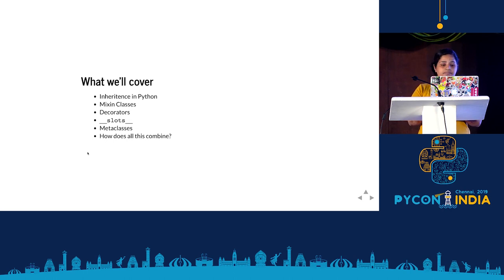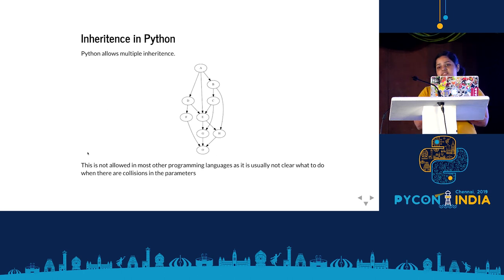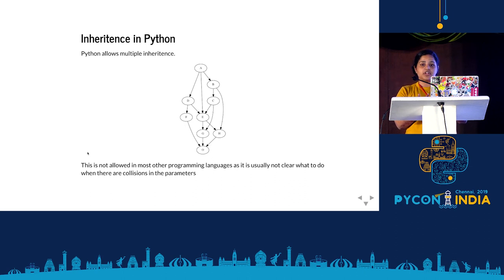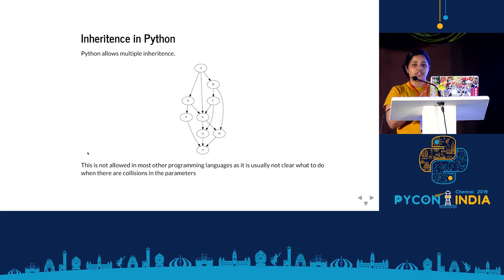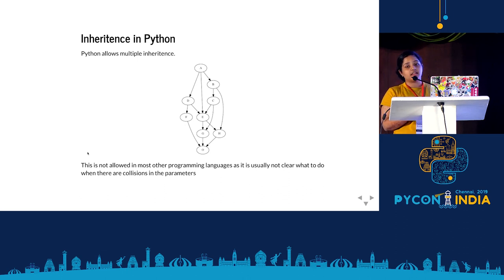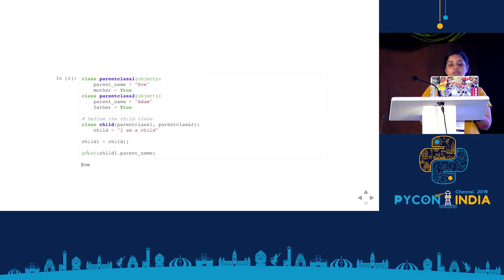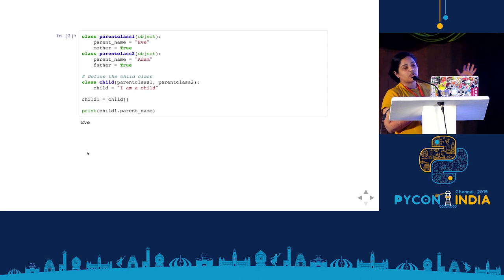Then I'll talk about what SymPy is and how all of this combines in the SymPy codebase. We all know what inheritance is. Let's say you have three classes: a class Person, which could be inherited by a class Royalty, and then you can have the Queen of England who inherits from Royalty. This is nice linear inheritance. But Python allows multiple inheritance, and most other languages don't allow this. The reason they don't is because of ambiguity — if class E inherits from D and C, and both D and C have inherited from B and A, you're not sure which property to keep.